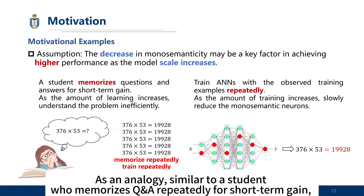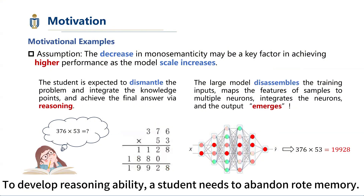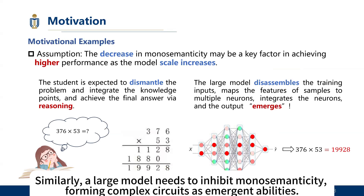As an analogy, similar to a student who memorizes Q&A repeatedly for short-term gain, an ANN forms monosemantic neurons to store answers without generality. To develop reasoning ability, a student needs to abandon rote memory. Similarly, a large model needs to inhibit monosematicity, forming complex circuits and emergent abilities.